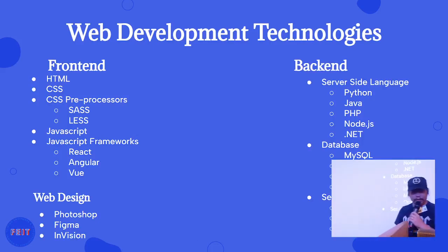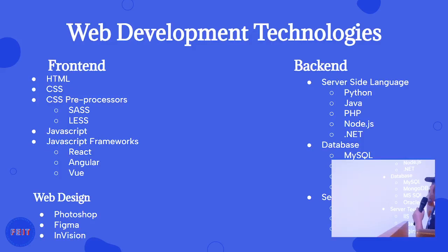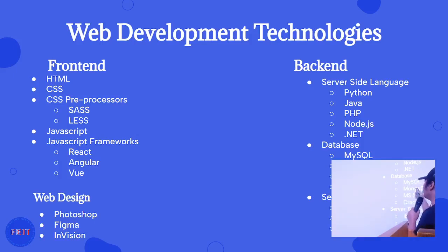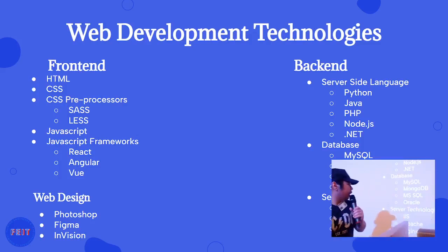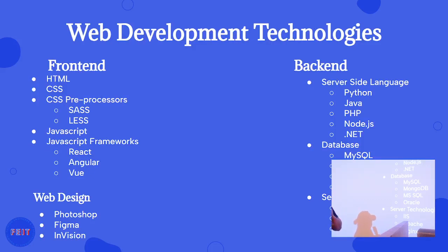For the backend, the server-side languages I've listed are the ones currently being used in Norway, though other technologies are used elsewhere too. These include Python, Java, PHP, Node.js, and .NET — all of which can be used in web development on the backend side. For databases, I've listed the most commonly used ones in the industry. For server technologies, there's IIS, Apache, and Nginx for your deployments.